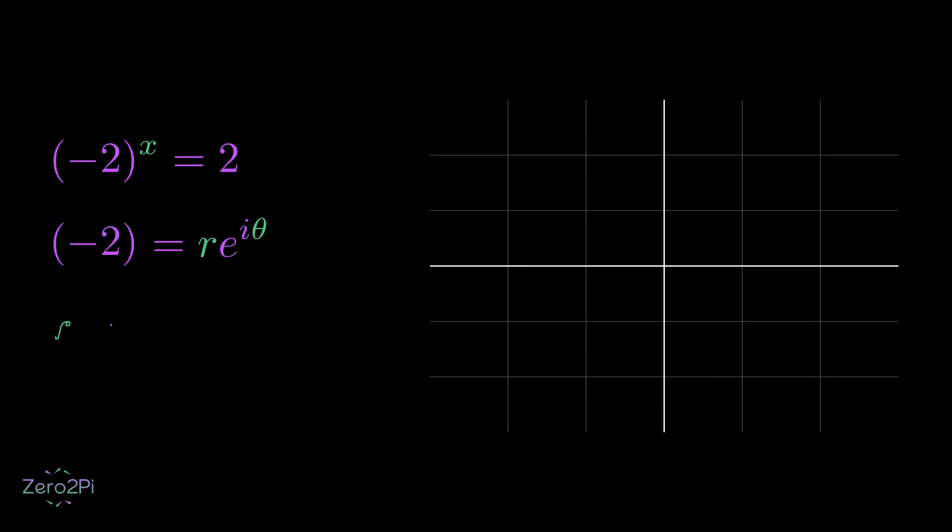In our case, it is 2. Theta in our case is pi, because negative 2 lies on the negative real axis, which makes an angle of pi from the positive real axis.